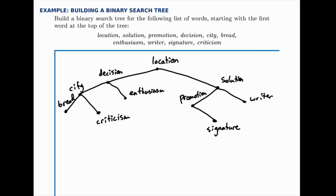So there's the final binary search tree for this list of words ordered alphabetically. To find any word, we would start at the top, and if we wanted to search before 'location,' we would move to the left. If we wanted to search after 'location,' we'd move to the right, and so on down through the tree until we find the word we're looking for.